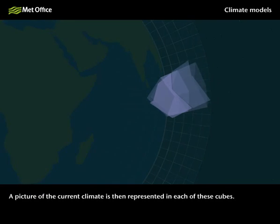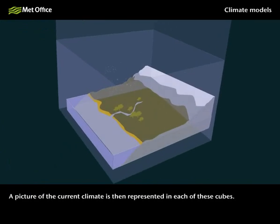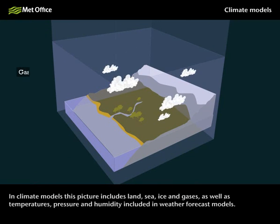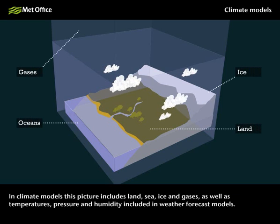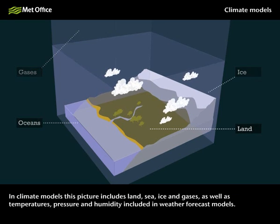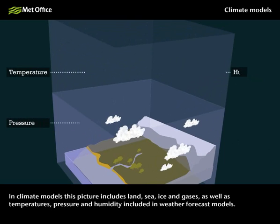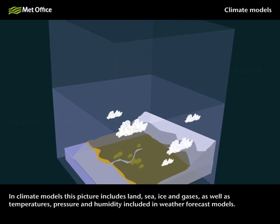A picture of the current climate is then represented in each of these cubes. In climate models this picture includes land, sea, ice and gases, as well as temperatures, pressure and humidity included in weather forecast models.